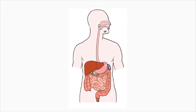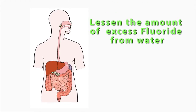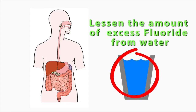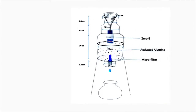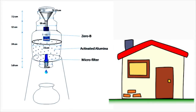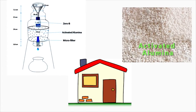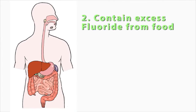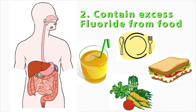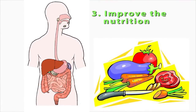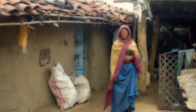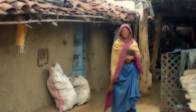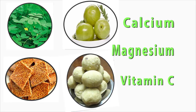We have to lessen the amount of excessive fluoride which is coming to humans from water. Defluoridation plants can be set up in households, working on the alumina principle to reduce fluoride in water. Second, we have to contain the excessive amount of natural fluoride in the food that occurs in endemic villages around the country. Thirdly, we need to improve the nutrition of people, particularly in rural areas, ensuring they eat foods containing adequate calcium, magnesium, and vitamin C.